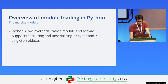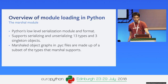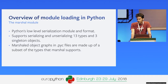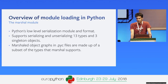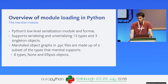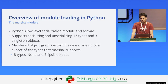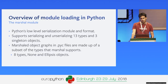This is probably the most important point in the whole talk: the marshal object graphs in .pyc files are made up of a subset of the types which marshal supports. And this subset is completely immutable — it's a very tiny subset: just booleans, integers, floats, complex objects, strings, bytes, frozen sets, and code objects.